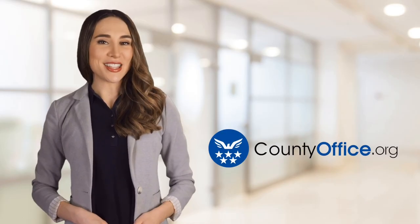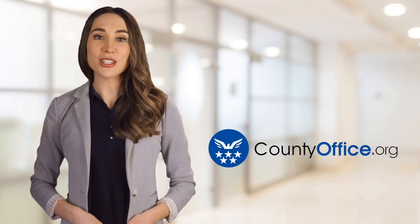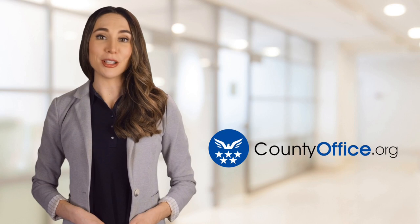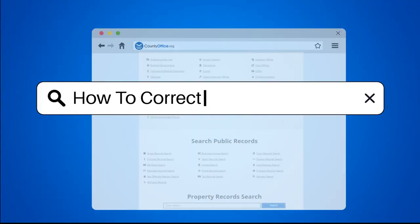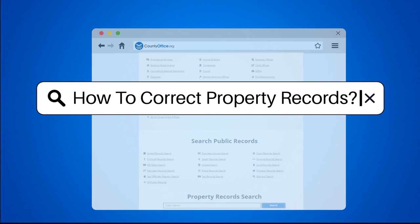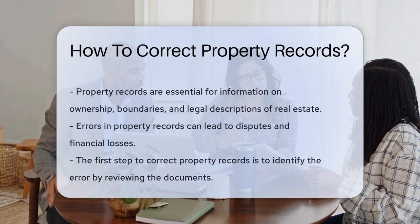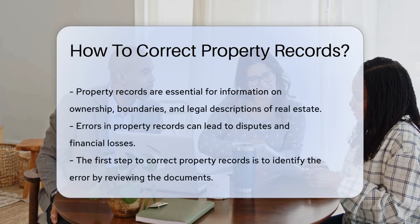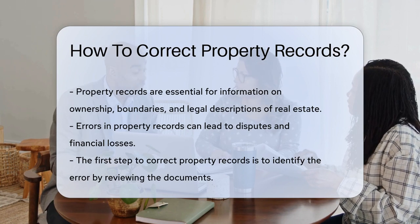Welcome to County Office, your ultimate guide to local government services and public records. Let's get started. How to Correct Property Records: Property records are crucial documents that provide information about ownership, boundaries, and legal descriptions of real estate.